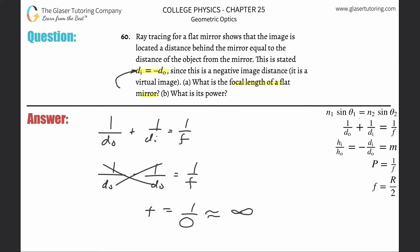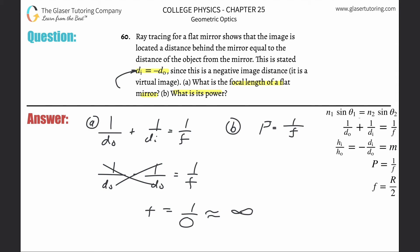And then Part B: what is its power? Power is equal to 1 over the focal length. Since the focal length is tending toward infinity, this whole fraction is going to zero. So the power tends toward zero — there's no power. That kind of makes sense.